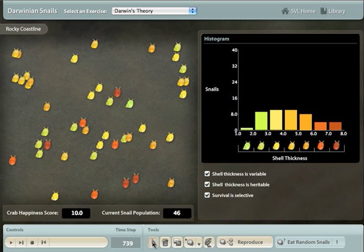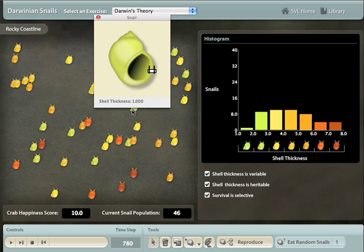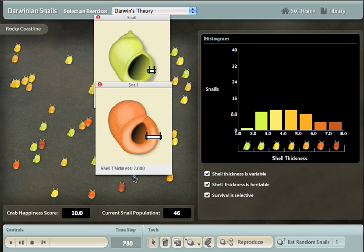Looking closely at the snails, you can see that the light-colored snails have thin shells, and the dark-colored snails have big, thick shells, making them harder to crush.